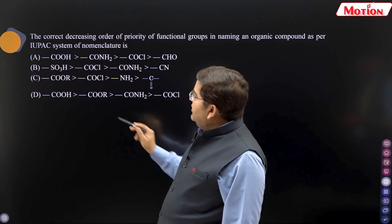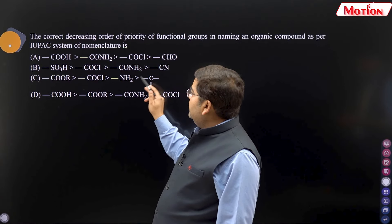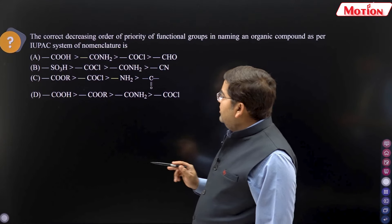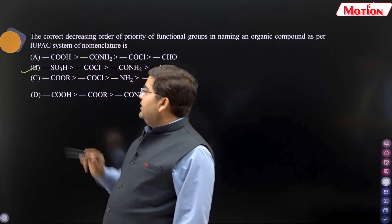Then, cyanide. After extra is COCL. Then cyanide. This is wrong. Because NH2 and COCO will be first and done. Now, this is correct. So, the right option is what? SO3H.